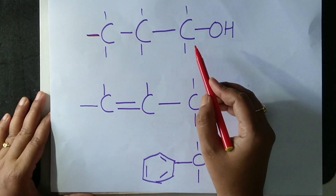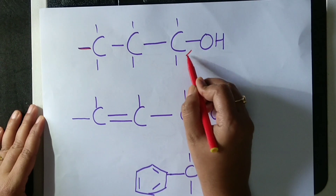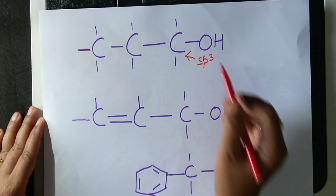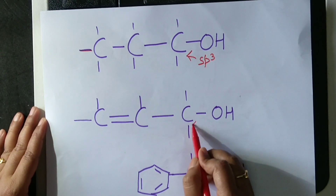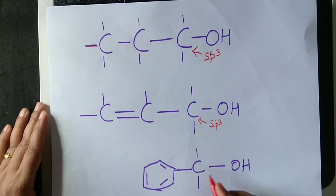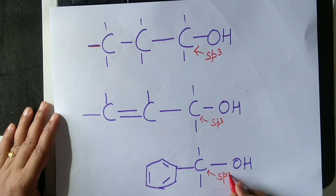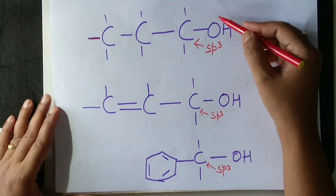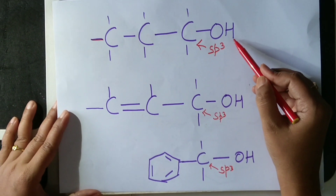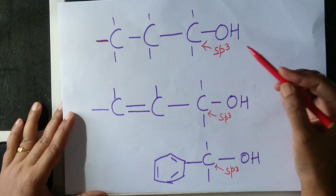What is the hybridization of this carbon atom? SP3 hybridized. How about this? SP3 hybridized. How about this? SP3 hybridized. So in all the three cases, OH is attached to an SP3 hybridized carbon atom.